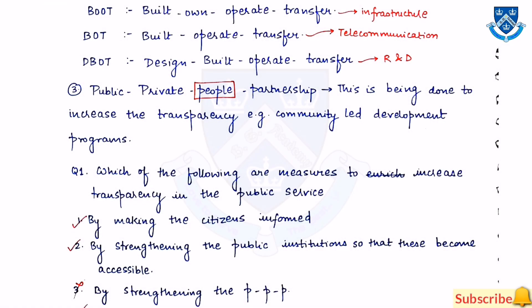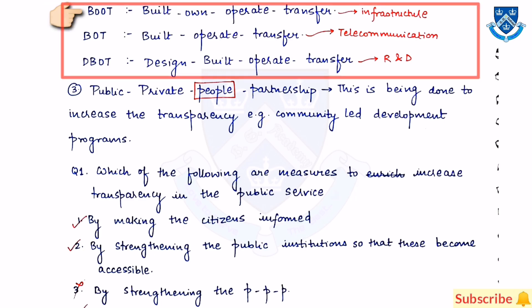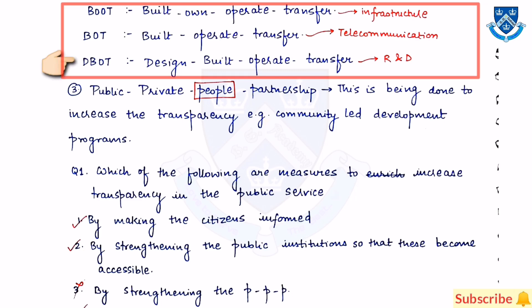The three PPP terms are: first, BOOT which stands for Build, Own, Operate and Transfer, related to infrastructure. Then BOT which stands for Build, Operate and Transfer, related to telecommunication. And the third one is DBOT which stands for Design, Build, Operate and Transfer, related to R&D.